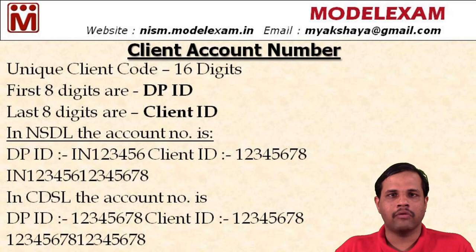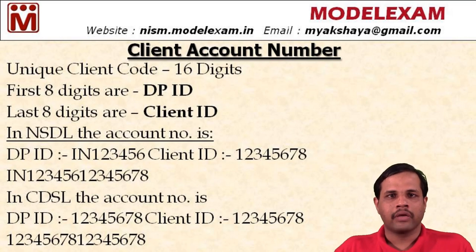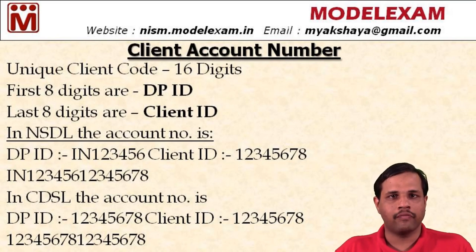The client ID is 8 digits. So both together form the client account number — that is IN followed by 6 digits for the DPID, then 8 digits for the client ID, totally 16 digits. So remember, if the client account number starts with IN, it means that the client has a DMAT account with NSDL.